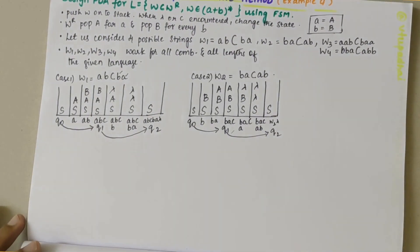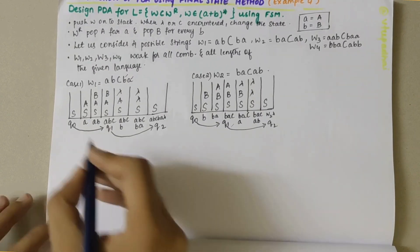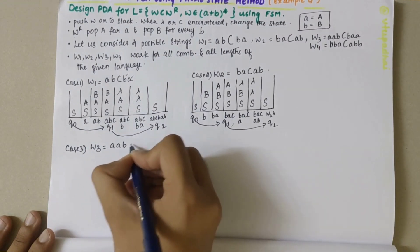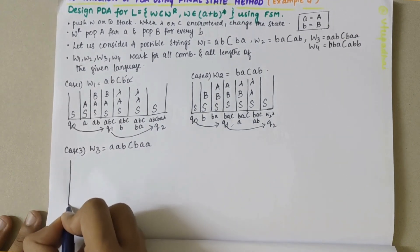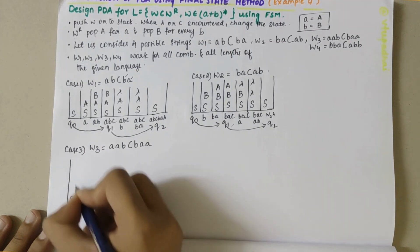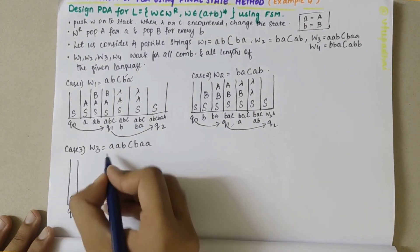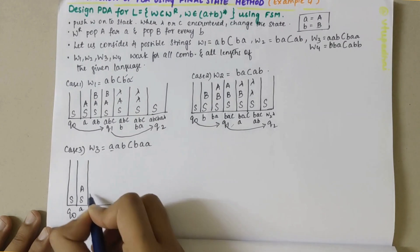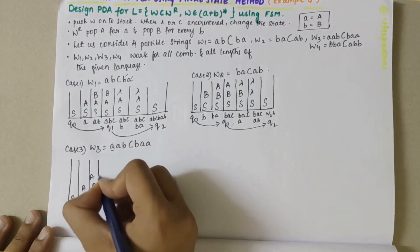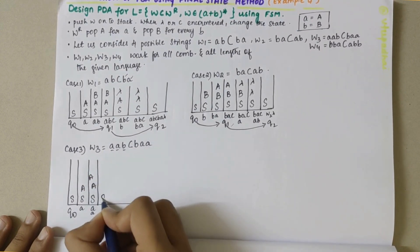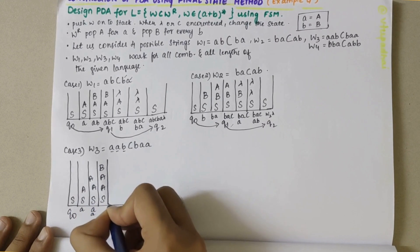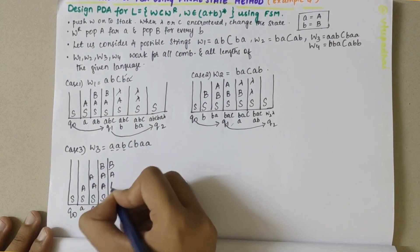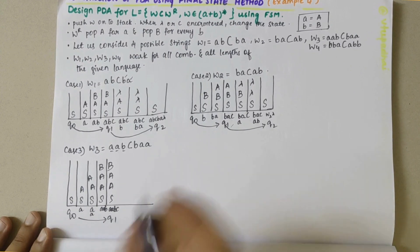For case 3 and case 4: W3 = A A B C B A A. Initially the stack is in Q0 state and empty. When A is encountered, push capital A. Again A is encountered, push another A. Then B is encountered, push capital B — stack now holds B, A, A. Next C is encountered, so keep the top of stack as it is and change state from Q0 to Q1.